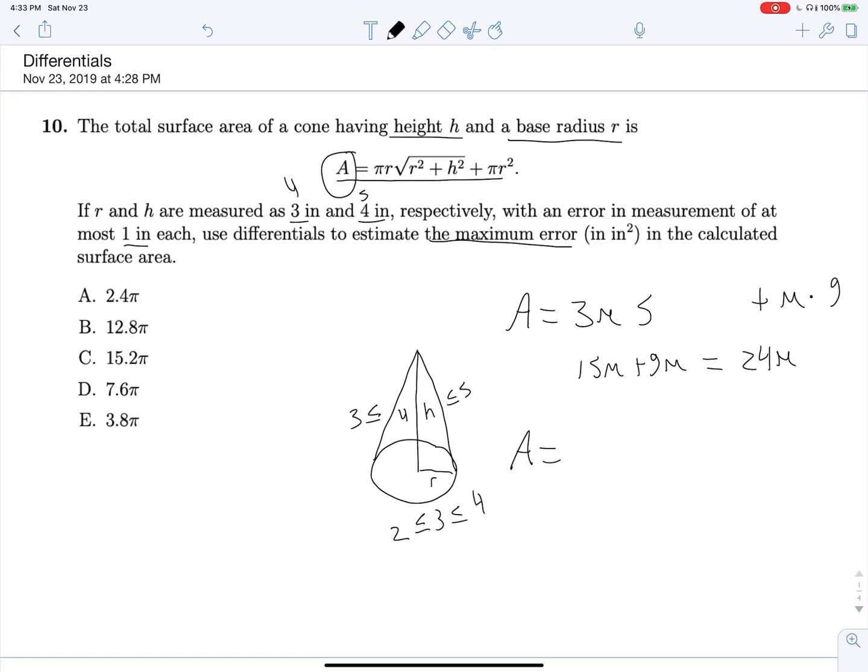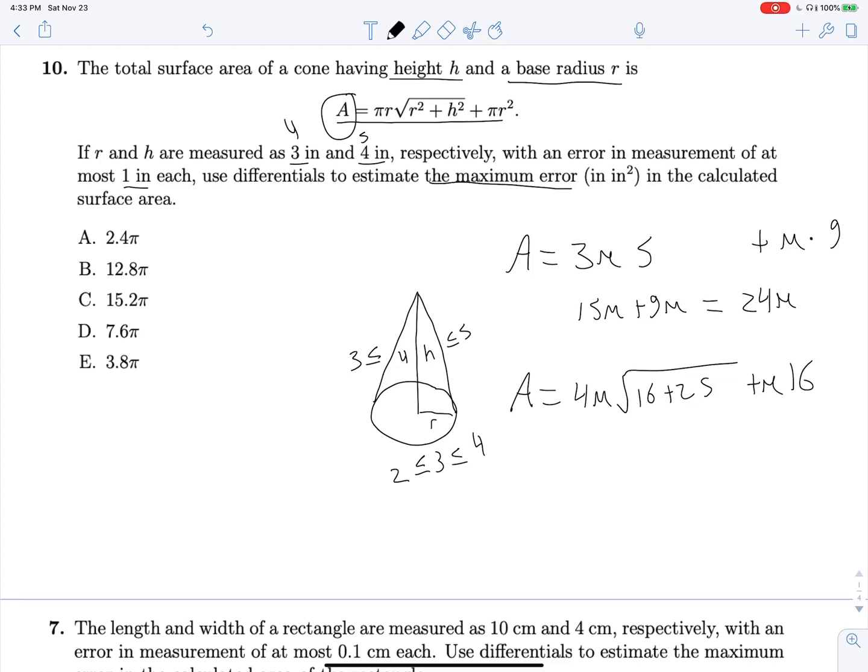This is going to simplify to 5. 15π plus 9π is 24π. And now all we have to do is evaluate at 4 and 5 and subtract to see our error. So if r is equal to 4, this will be 4π times the square root of 4 squared plus 5 squared, so 16 plus 25, plus π times 16. So here's where things get a little hairy if you choose not to go down the calculus route. And we'll see why, because this is going to give us 61.